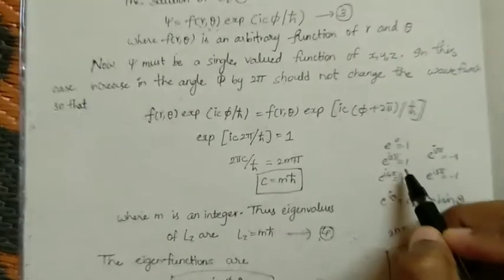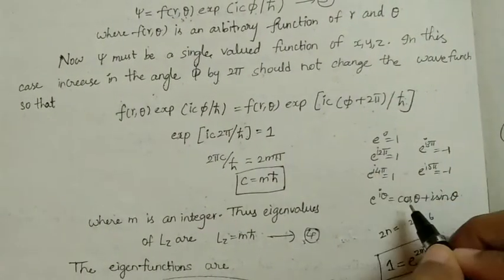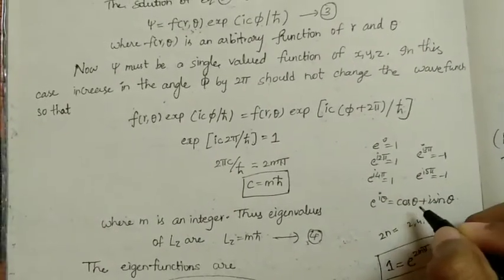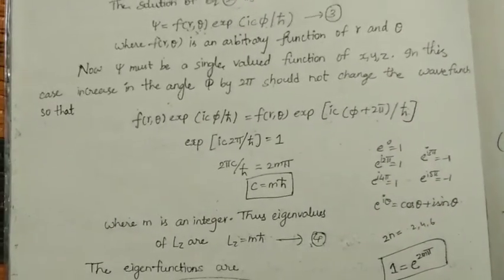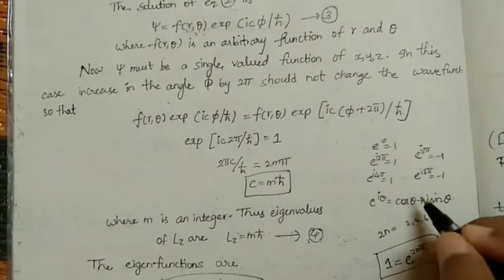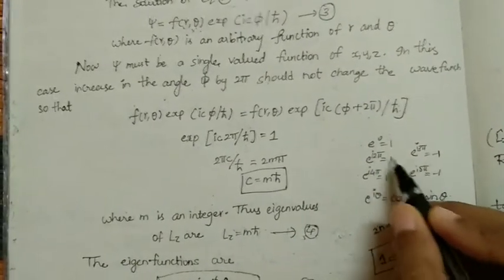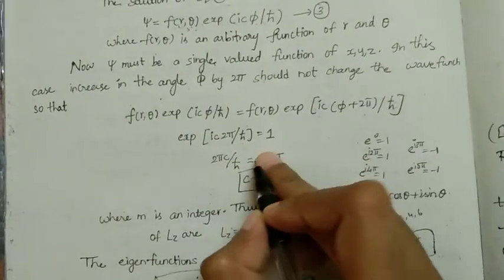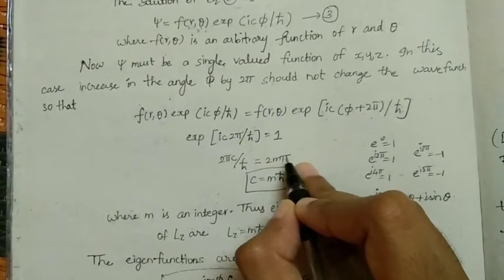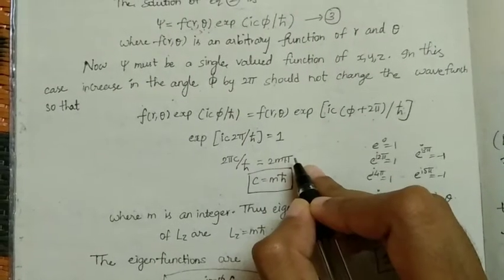We know that e to the power i-theta equals cos(theta) plus i-sin(theta). Now e to the power 0 equals 1, and e to the power i-2-pi also equals 1 because cos(2-pi) equals 1 and sin(2-pi) equals 0, giving 1 plus i times 0 equals 1. For odd multiples like pi, cos(pi) equals minus 1, giving minus 1. So only for even multiples — 2-pi, 4-pi, 6-pi — do we get 1. Hence the exponent must equal 2m-pi, where m is an integer.